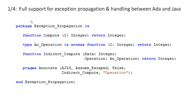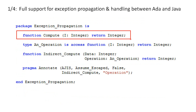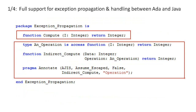ACES provides full support for exception propagation and handling between ADA and Java. This package demos the ability of AGES to control the flow of exceptions between languages. Here we declare two ADA functions, compute and indirect compute, where an operation specifies a callback class for Java to implement.